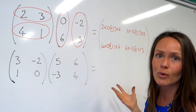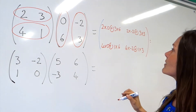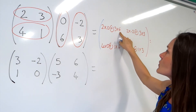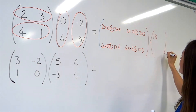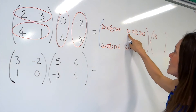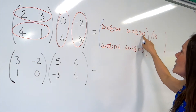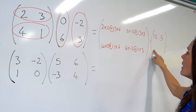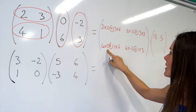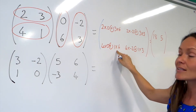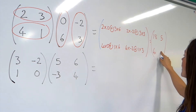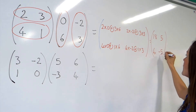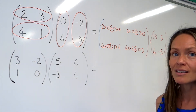We've got to work it out now. In the final answer, 2 times 0 is just 0, and 3 times 6 is 18, so the top left answer is 18. For the top right, 2 multiplied by minus 2 is minus 4, and 3 times 3 is 9, so minus 4 plus 9 is 5. For the bottom left, 4 times 0 is 0 and 1 times 6 is 6, so 0 plus 6 is 6. And for the last one, 4 times minus 2 is minus 8, plus 3 gives me minus 5. So there's multiplying matrices.